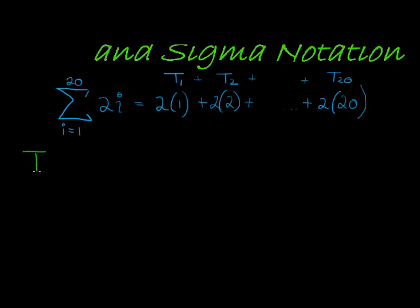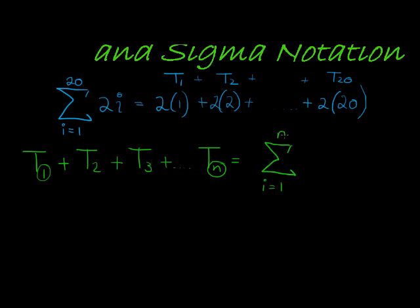Another way of writing term 1 plus term 2 plus term 3 plus all the way up to term n is to say we just take the sum of i starting at 1 and going up till n of what? Well of Ti.